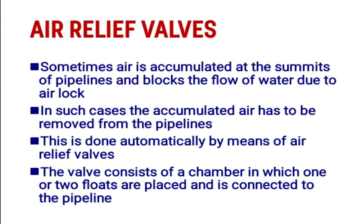Air relief valves: sometimes air accumulates at the summit of pipelines and blocks the flow of water due to air lock. In this case, the accumulated air has to be removed from the pipelines. This is done automatically by means of air relief valves. This valve consists of a chamber in which one or two floats are placed and is connected to the pipeline.